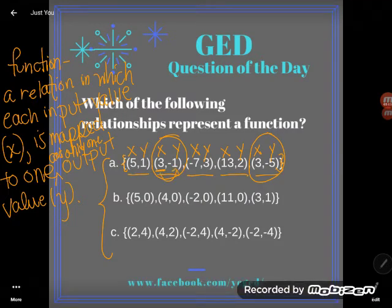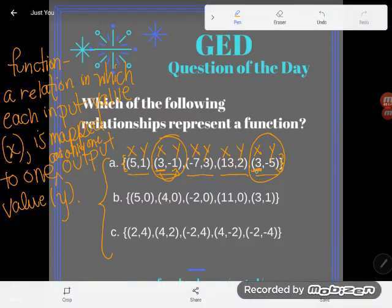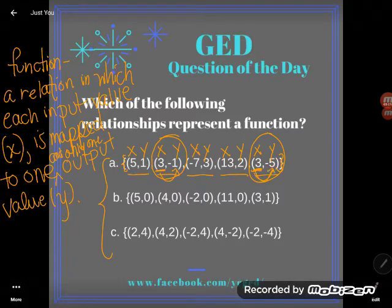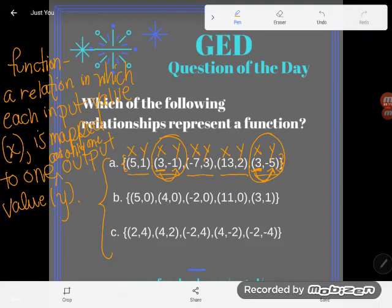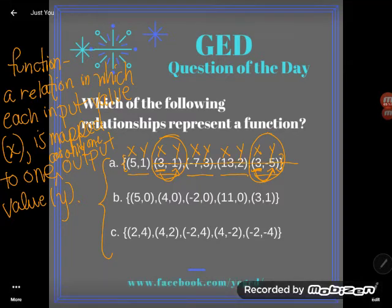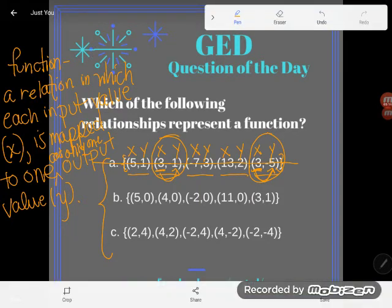This relation is not a function because sometimes the x value of 3 is mapped to a y output value of -1, but sometimes an x value of 3 is mapped to a y output value of -5. We can't have, when we put in the same number, we get out a different answer and have it still be a function. So this one is not a function.